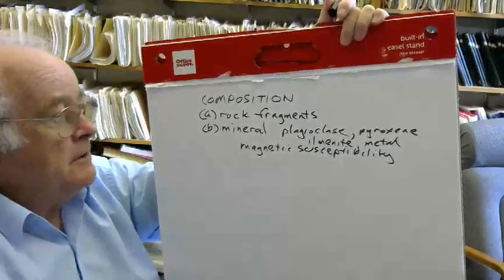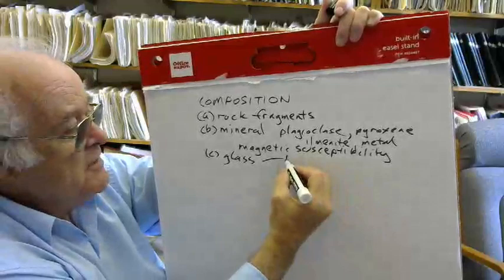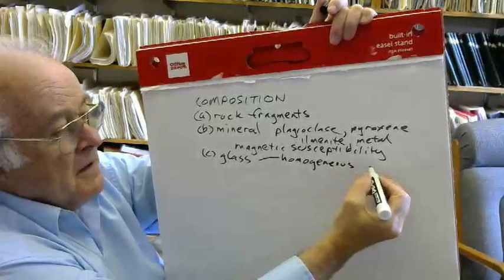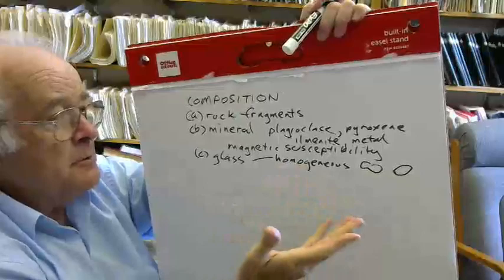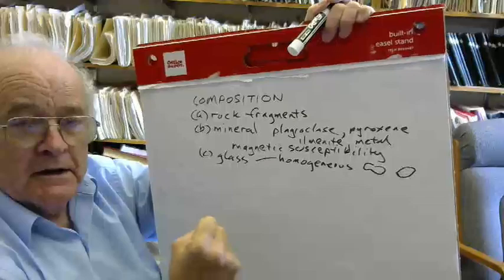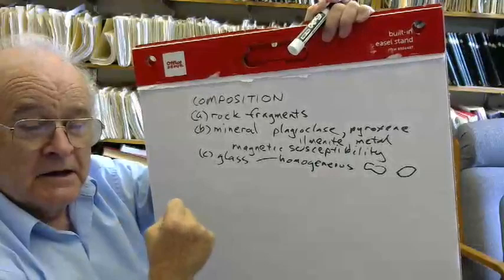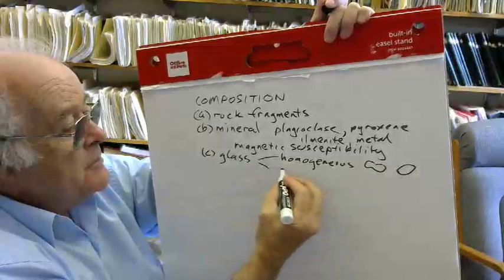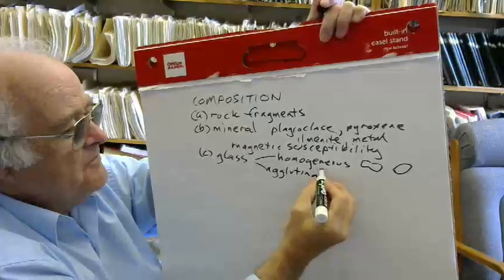Metal would be just iron-nickel from the iron meteorites. One easy way to detect metal in the lunar core was to measure the magnetic susceptibility, which is the ability of a material to enhance an applied magnetic field. Most of the stuff in the lunar soil, however, is glass. And there are two different sorts: homogeneous, and these are sometimes dumbbells or droplets of glass. These are from these micrometeoroid impacts.